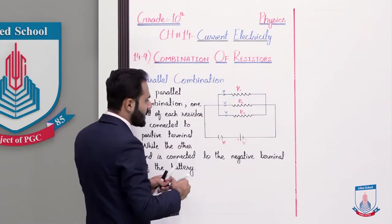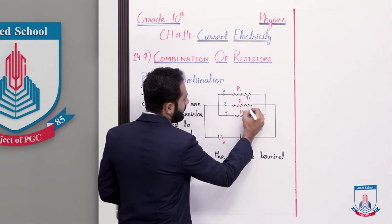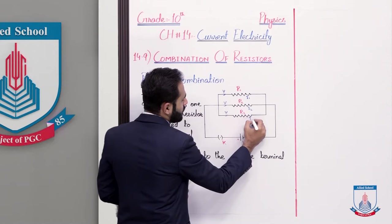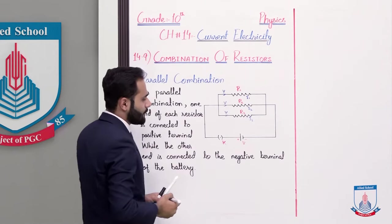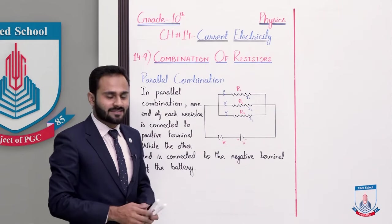So is case mein jo current hoga yahaan par that is i1, is jagah jo current hoga that is i2, aur is jagah jo current hoga that is i3. Clear? So parallel case mein voltage same hai. Toh hum likh sakte hain.